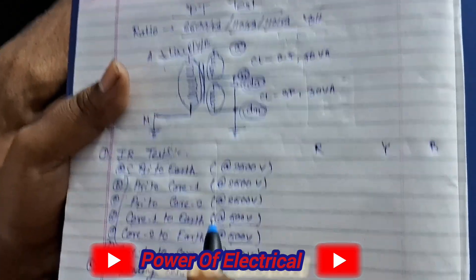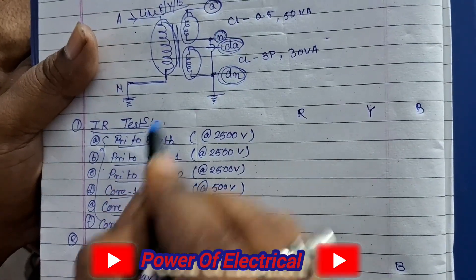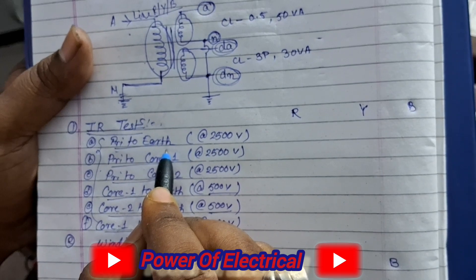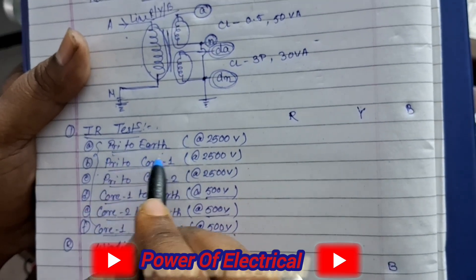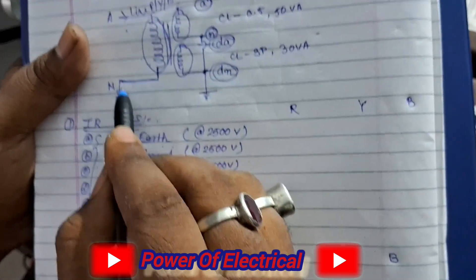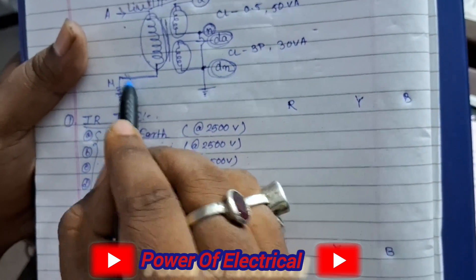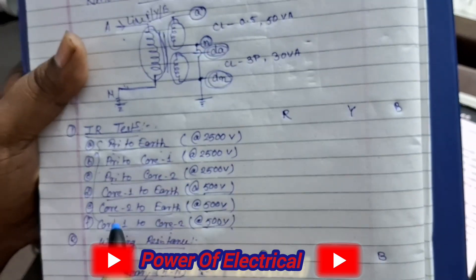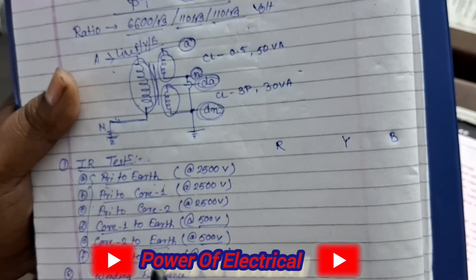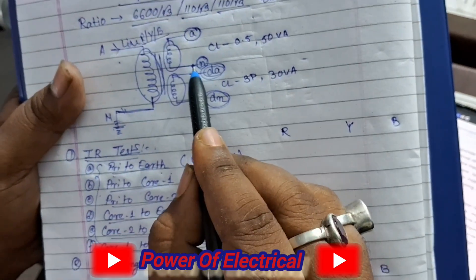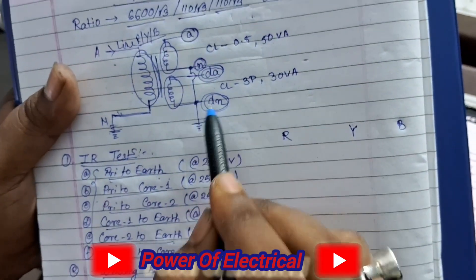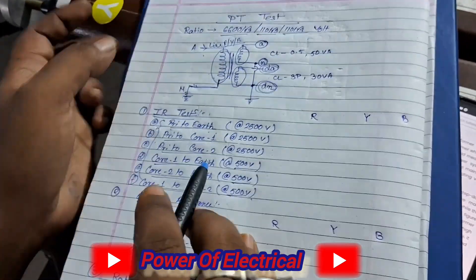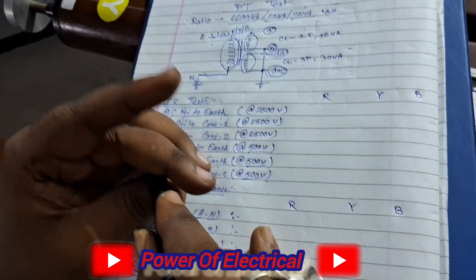For the IR testing, we need to remove the neutral link. When we perform the primary to earth megger test, we need to remove the neutral link. Similarly, when we do core one to earth and core two to earth megger tests, we need to remove the neutral link of small N and DN terminals. Now we are going to show practically how we do the test in the substation or power plant.